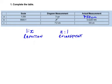We're given that the diagram measurement is 7.2 centimeters, and the actual measurement is only 0.6 centimeters. So that means our diagram measurement is greater than our actual measurement, so this is an enlargement.